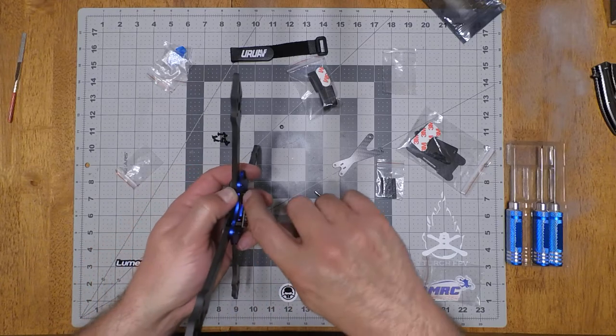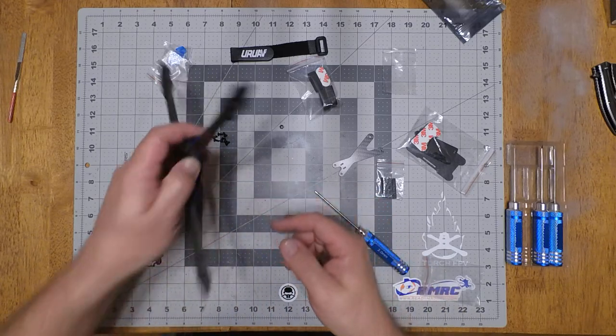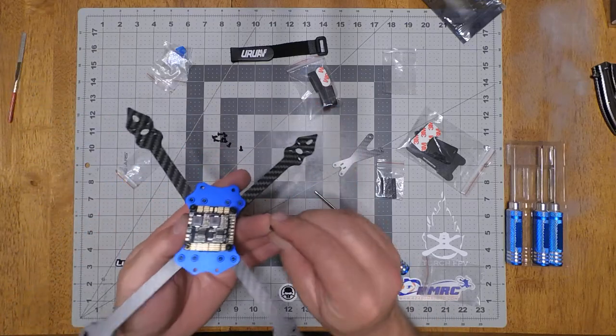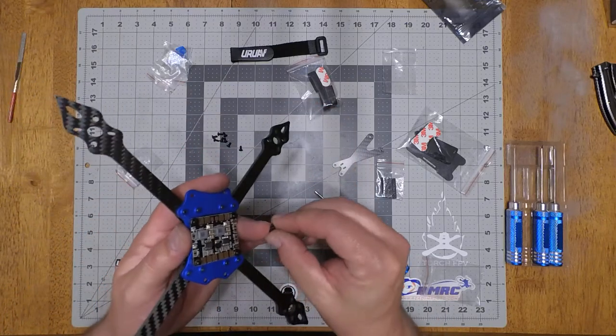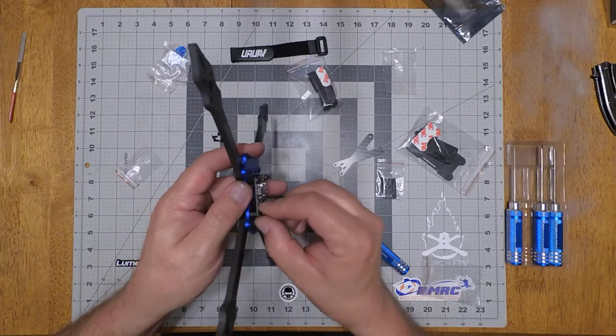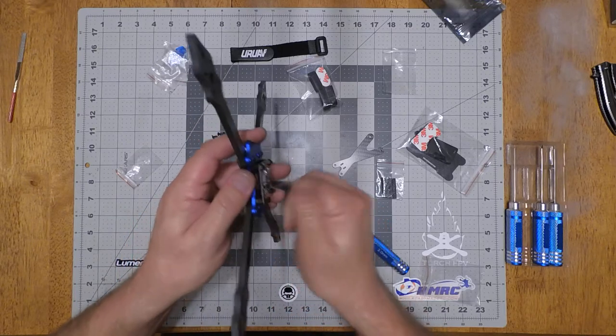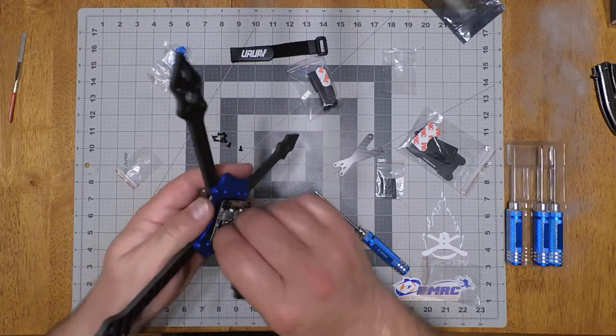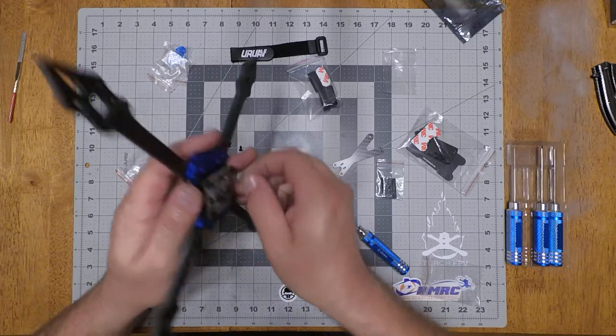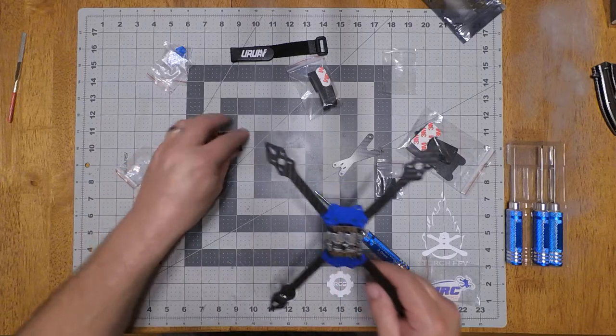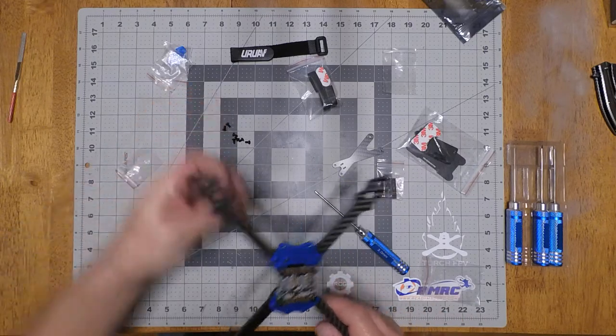It's plenty enough to hold a flight controller, but I'd like to see them be like a couple millimeters longer. But they will definitely work. I don't use the nylon standoffs anyways. I've been using the anti-vibration standoffs on all my builds. So that's how that goes in. And then we can put the standoffs on.